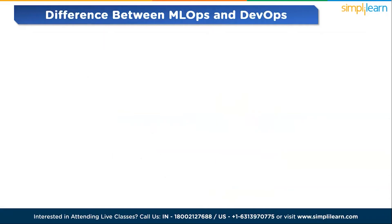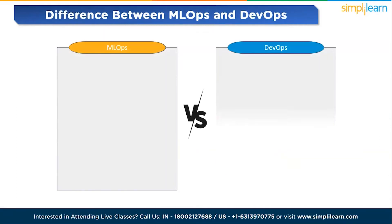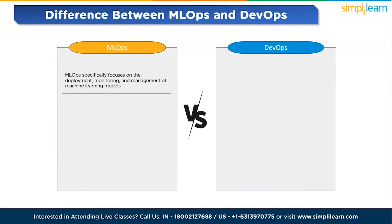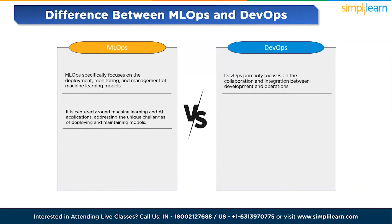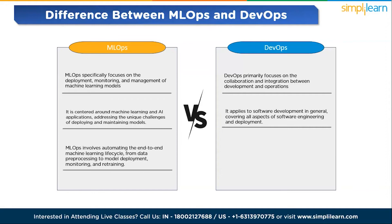Now let's look at the differences between MLOps and DevOps. First, MLOps is specifically focused on the deployment, monitoring, and management of machine learning models, while DevOps focuses on collaboration and integration between development and operations. Second, MLOps is centered around machine learning and AI applications, addressing the unique challenges of deploying and maintaining models, while DevOps applies to software development in general, covering all aspects of software engineering and deployment.